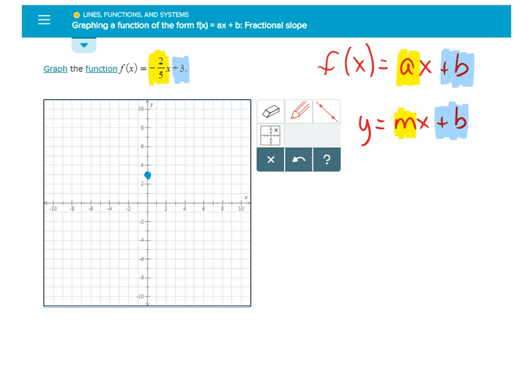Now I'll use my pen. So I'm going to go down 1, 2, and then go over 1, 2, 3, 4, 5, and I find another point on my line right here.